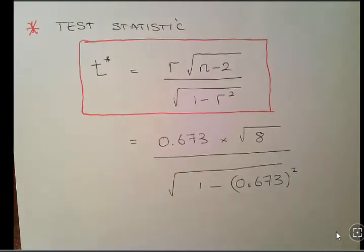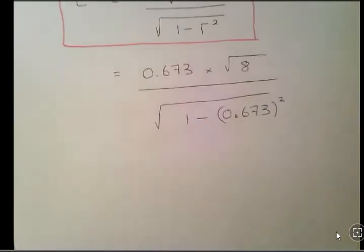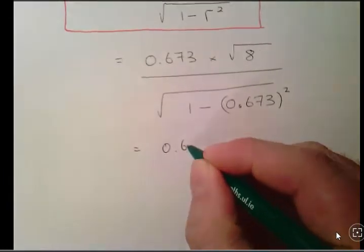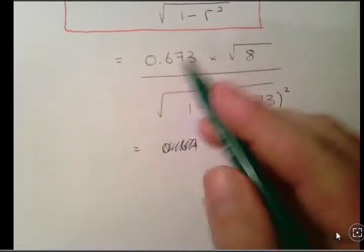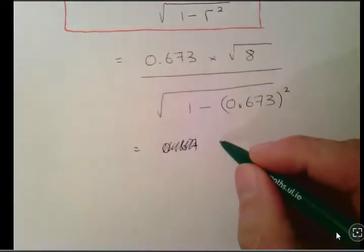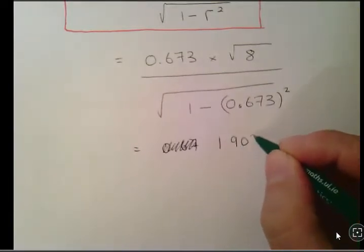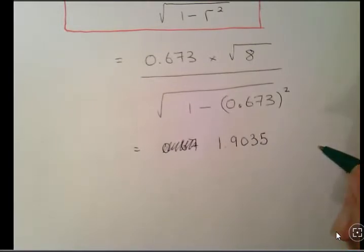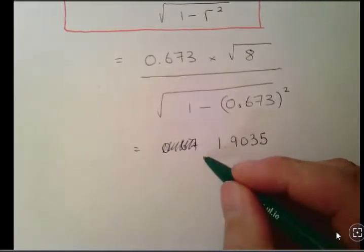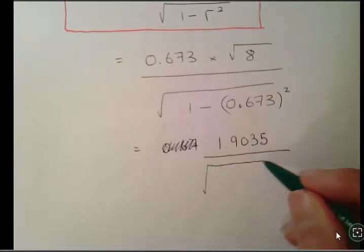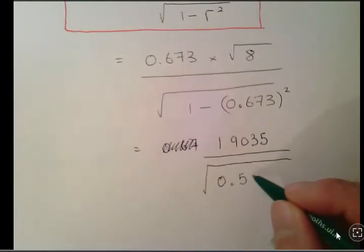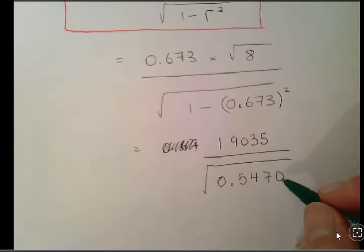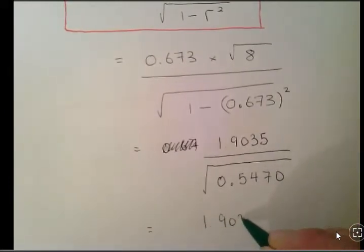This is a bit of calculator work, so I'm going to finish this off. That equals 0.673 by the square root of 8. That is simply 1.9035, working to 4 decimal places. And the underneath, a straightforward calculation: we have 1 minus 0.673 squared, which should work out to be the square root of 0.5470. When you get the square root of that, you should get 1.9035 over 0.7396.